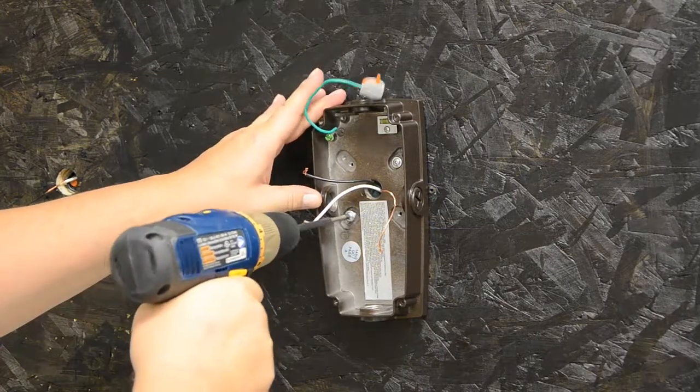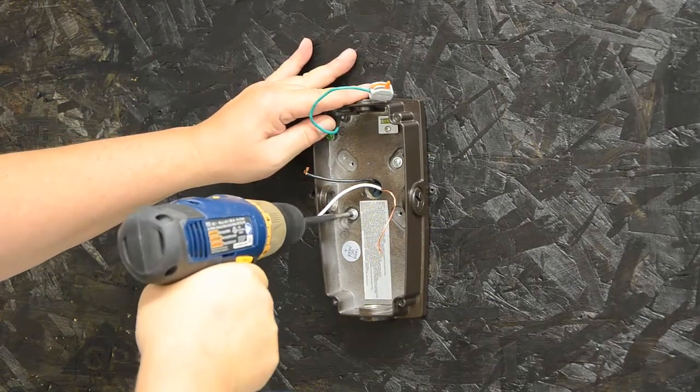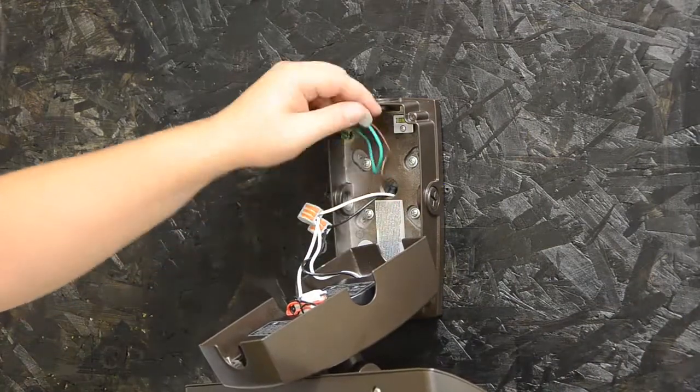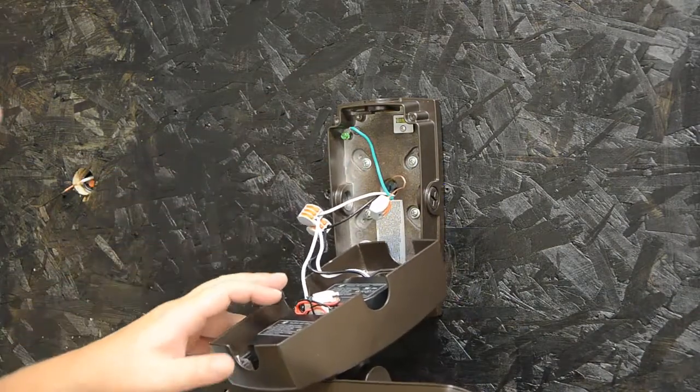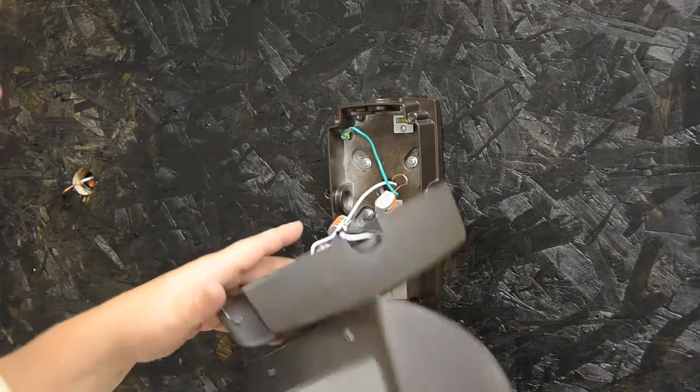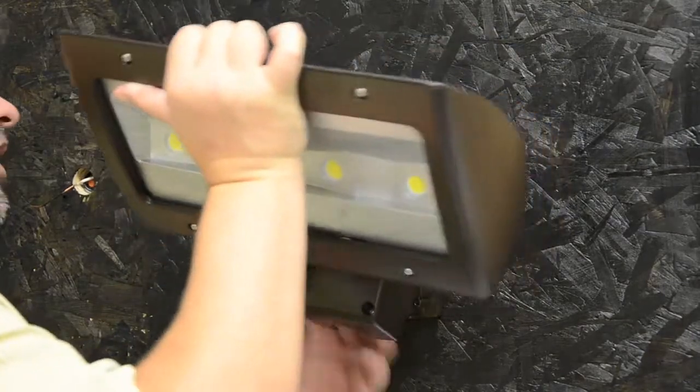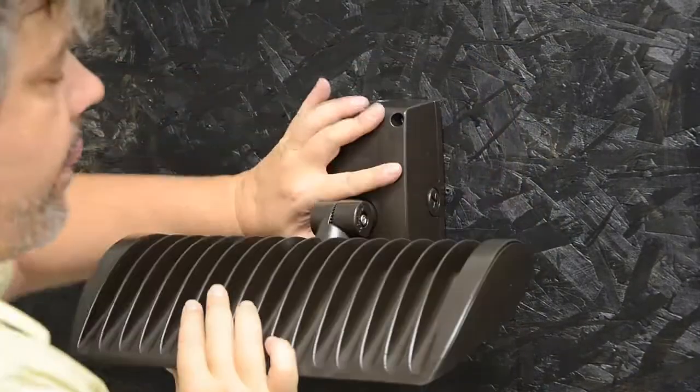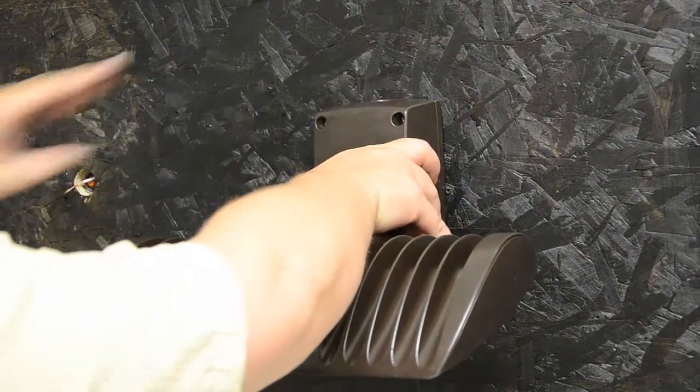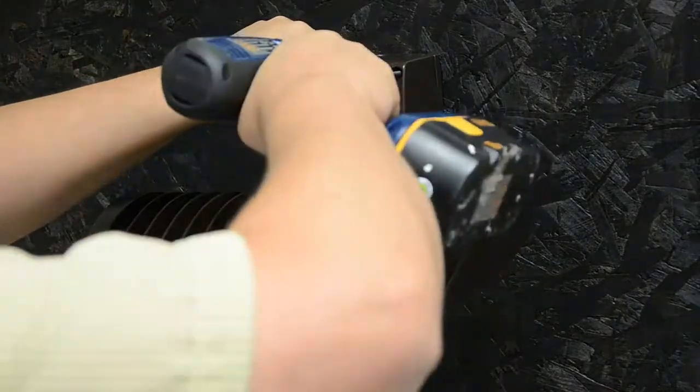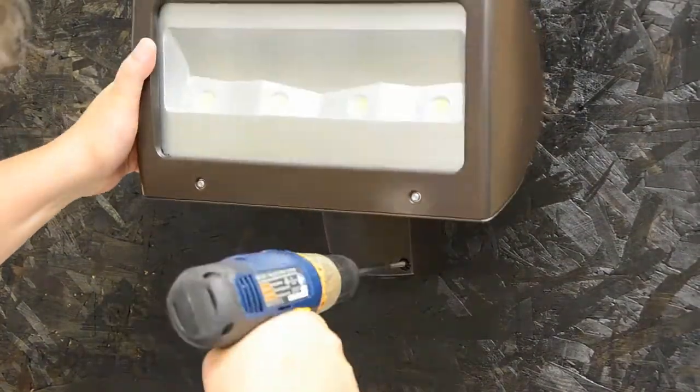So I connected my ground. I did my neutral to neutral and my black to black with the supplied connectors. The connectors are all ready to go and pre-wired. You just have to add the utility power line. Now I just have to screw it in place and it's there to stay.